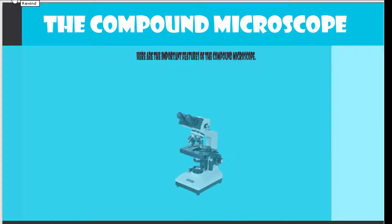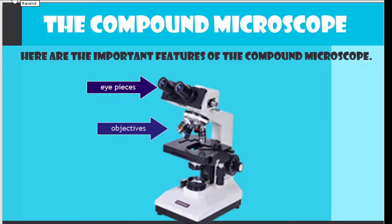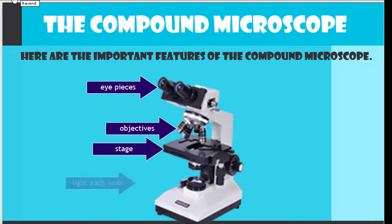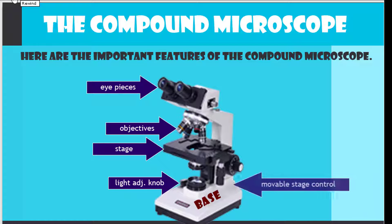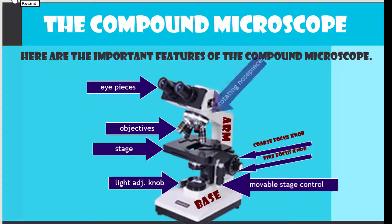Here are the important features of the compound microscope: the eyepieces, the objectives, the stage, the light adjustment knob, the base, the movable stage control, the fine focus knob, the coarse focus knob, the arm, and the rotating nose piece.